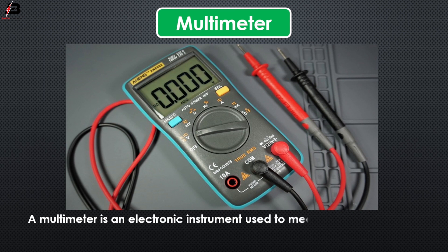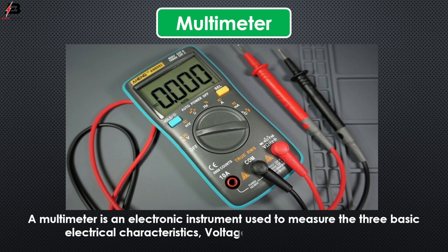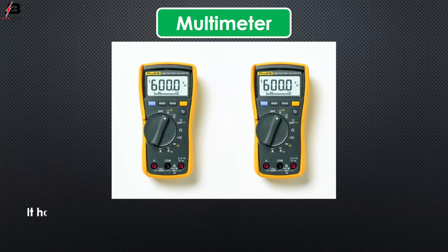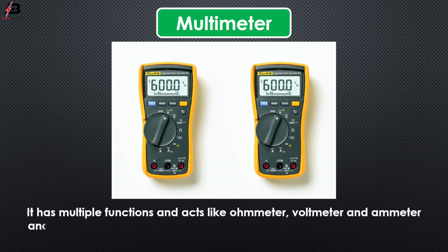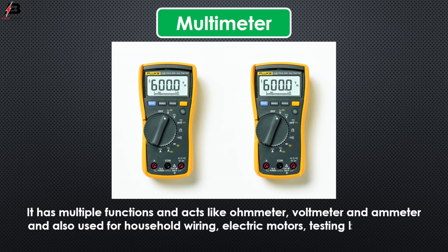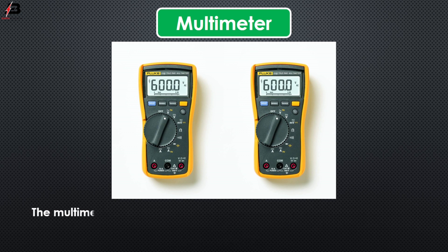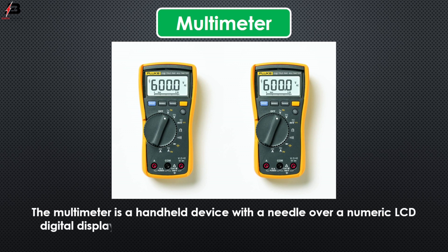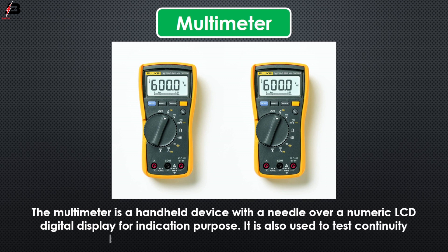Multimeter: A multimeter is an electronic instrument used to measure the three basic electrical characteristics: voltage, current, and resistance. It has multiple functions and acts like an ohmmeter, voltmeter, and ammeter, and is also used for household wiring, electric motor testing, batteries, and power supplies. The multimeter is a handheld device with a numeric LCD digital display for indication. It is also used to test continuity between two points in an electrical circuit.